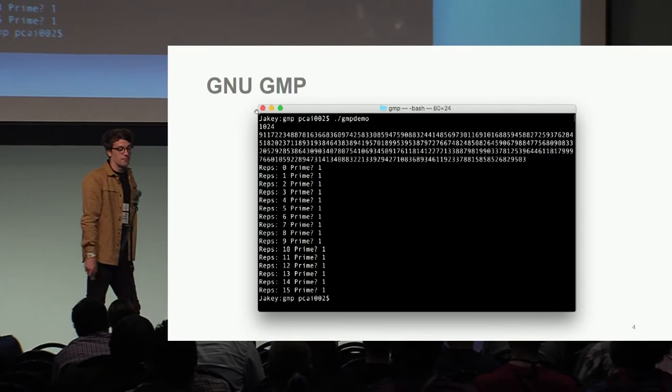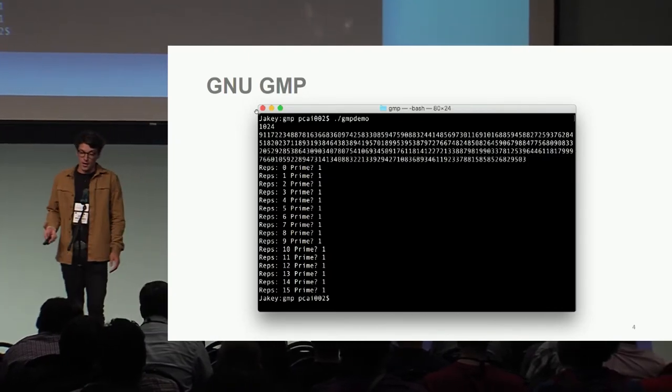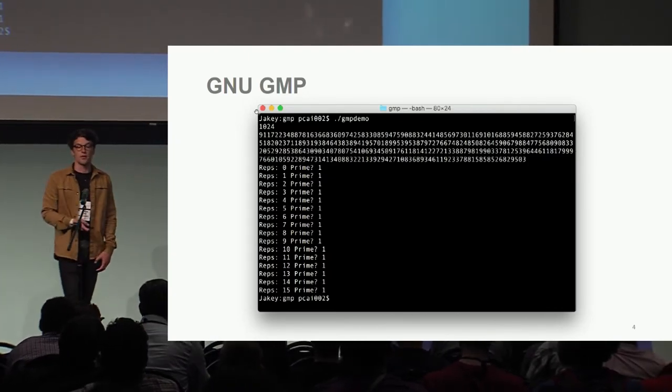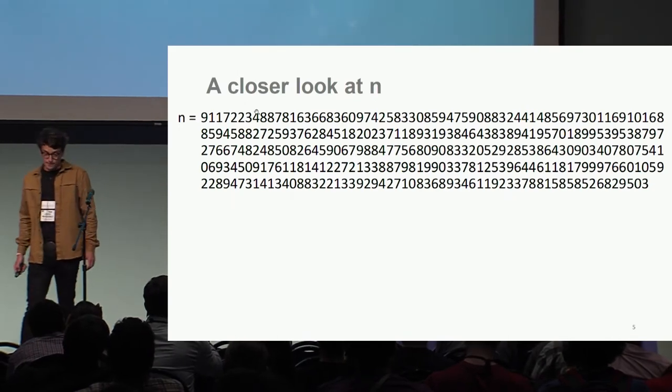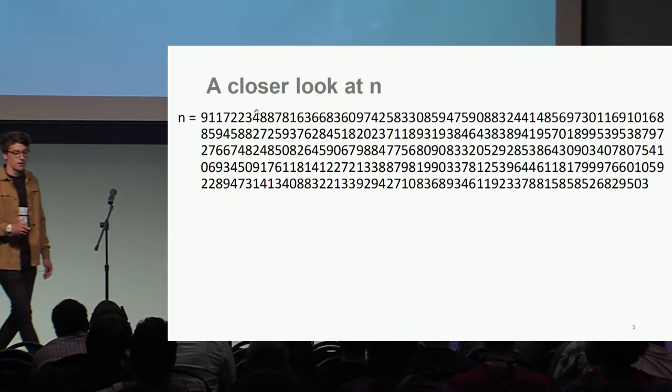Here we see that each time GMP declares that this number is prime, even up to the 15th round of Miller-Rabin. That's great. So let's take a closer look at this number. Well, in fact, this number isn't actually prime. It's a composite.